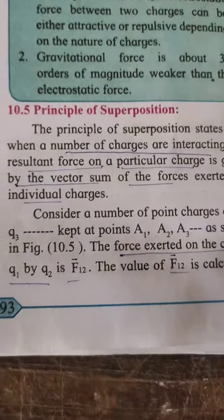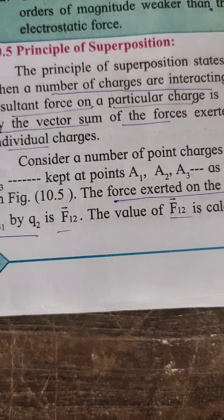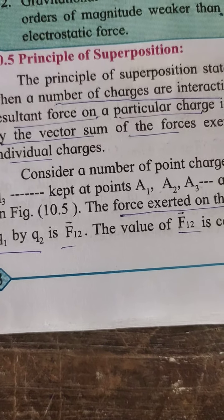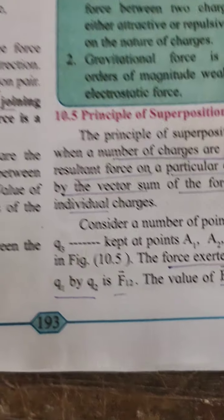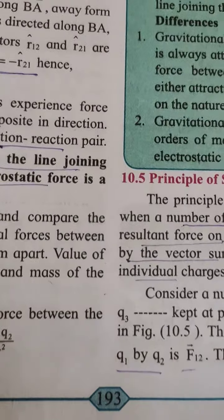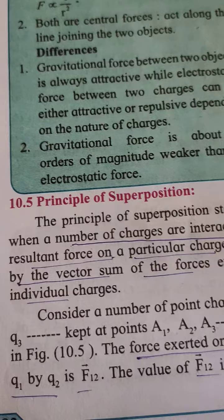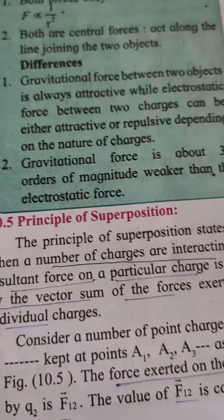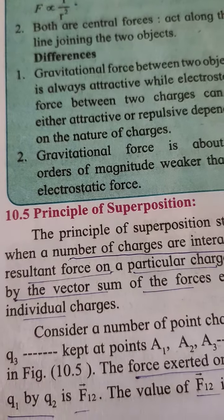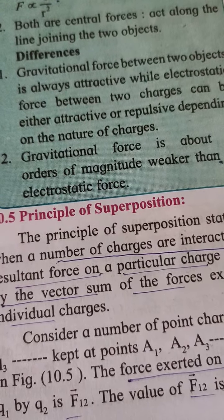The next topic is the principle of superposition of charges. When charges are transferred from one part of a body to another, the total number of charges remains constant — none are created or destroyed, but charge can be transferred from one part of the system to another. So the total number of charges remains constant.